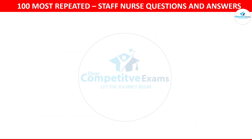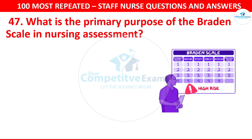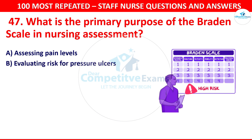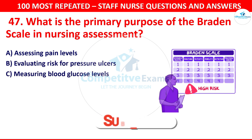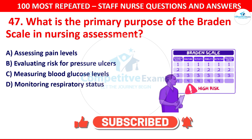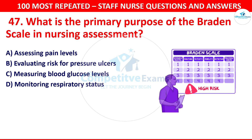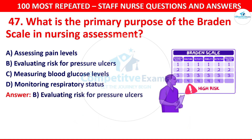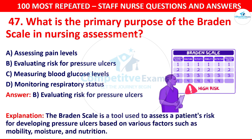Question number 47: What is the primary purpose of the Braden scale in nursing assessment? Options are assessing pain levels, evaluating risk for pressure ulcers, measuring blood glucose levels, or monitoring respiratory status. The correct answer is evaluating risk for pressure ulcers. The Braden scale is a tool used to assess patient risk for developing pressure ulcers based on various factors such as mobility, moisture, and nutrition.